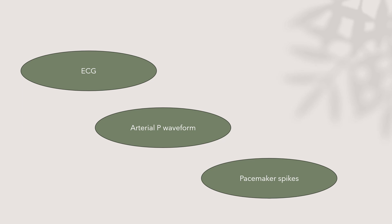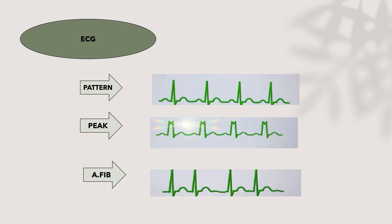The most important triggers are ECG, arterial pressure waveform, and pacemaker spikes. The ECG is the best trigger — better than arterial pressure waveform — because the electrical impulse precedes the mechanical impulse. There are three ECG trigger types. The first is the pattern type, which is the preset default mode: the computer analyzes the height, width, and slope of the positively or negatively deflected QRS complex, giving good timing for balloon inflation and deflation.